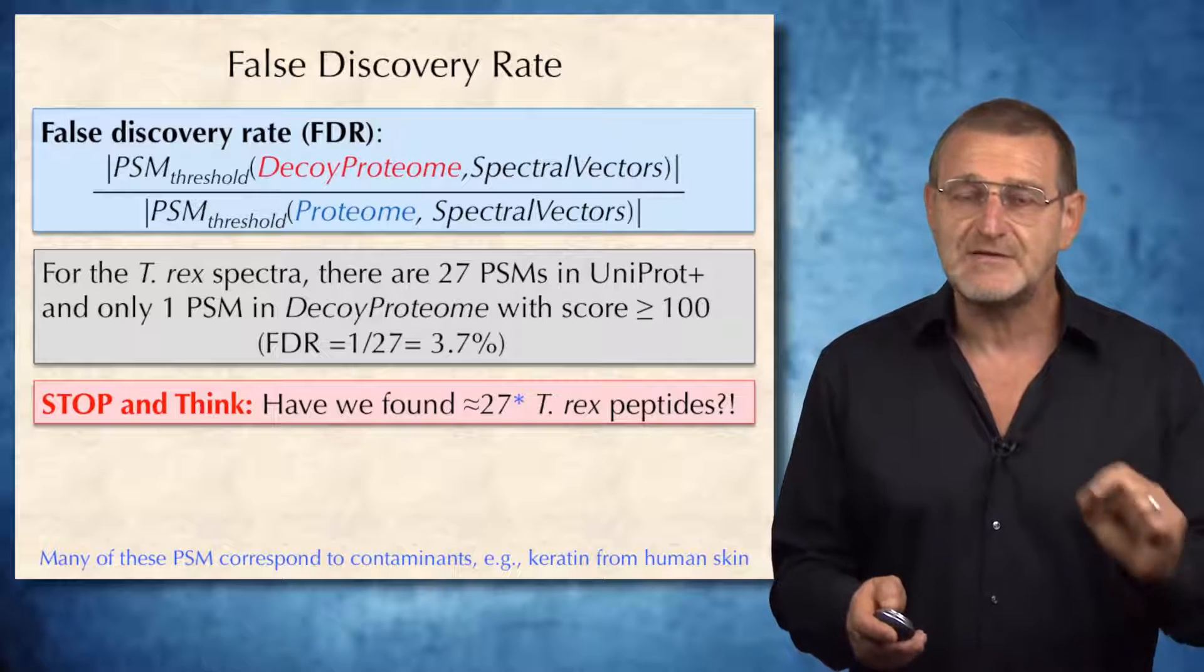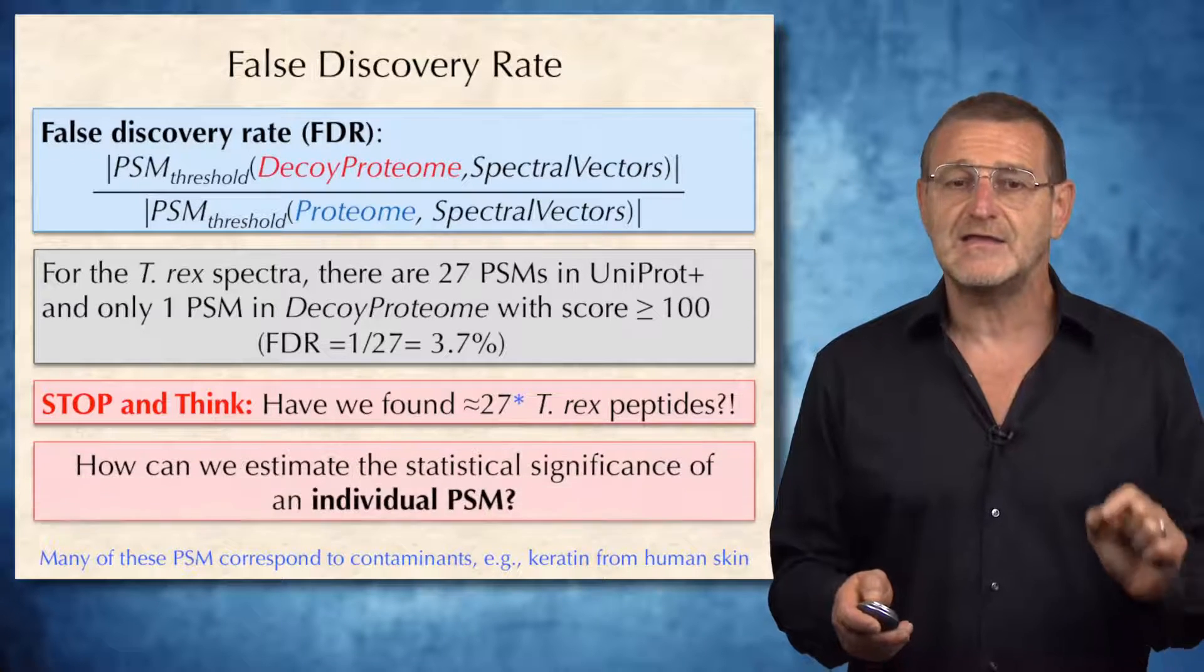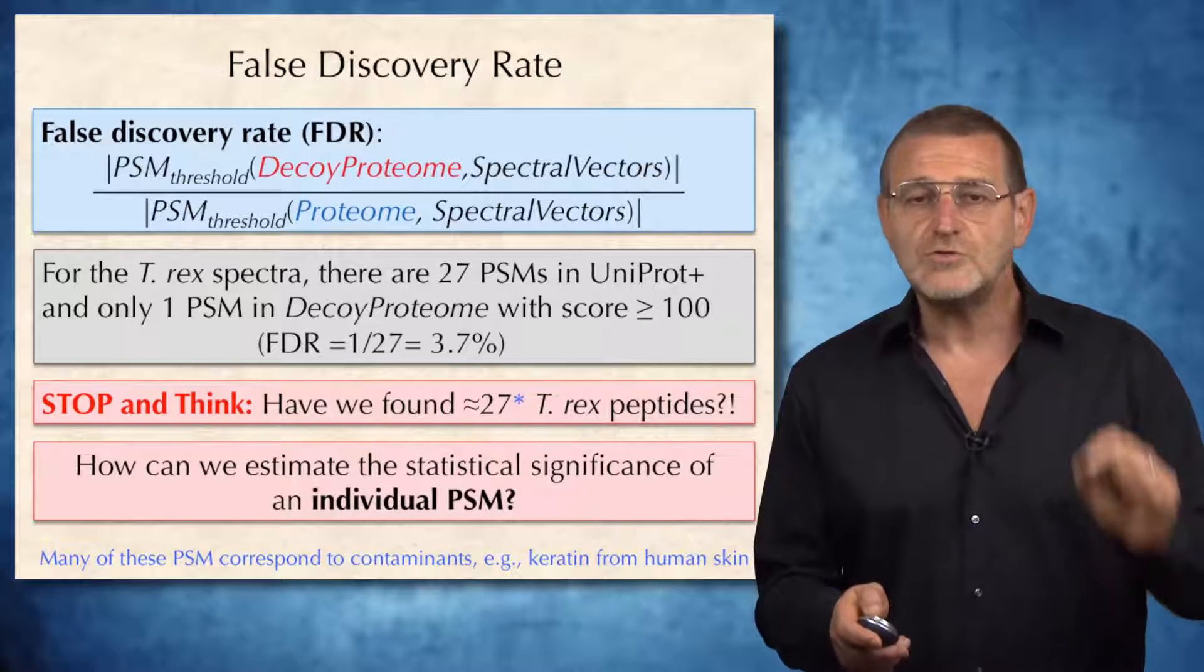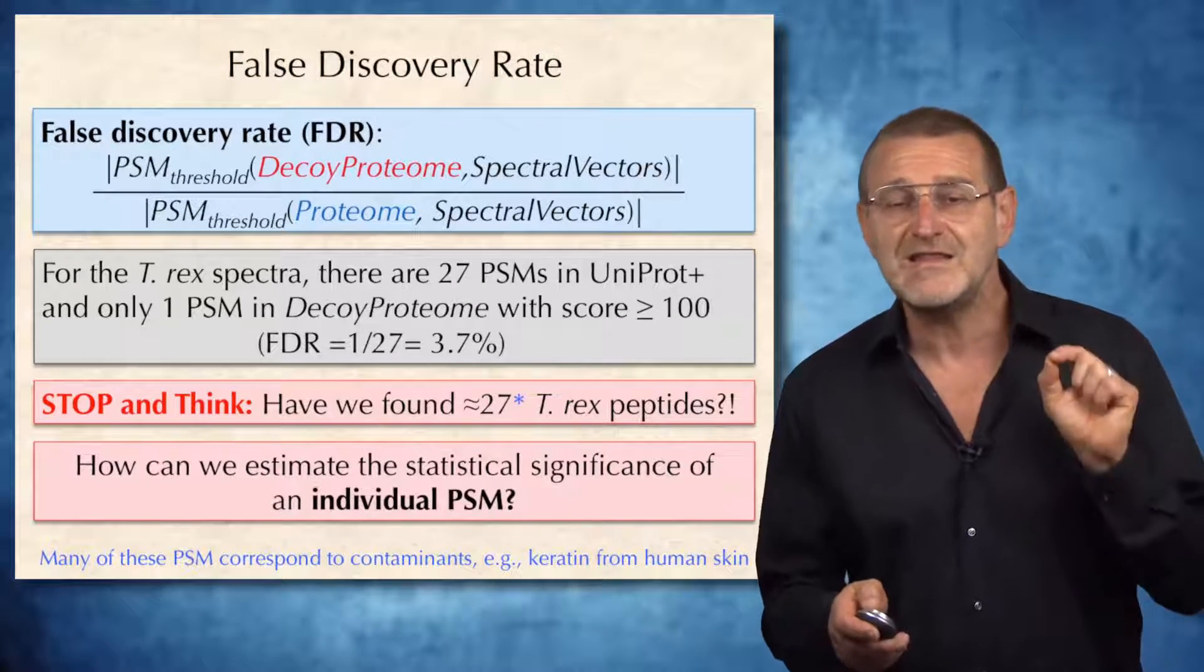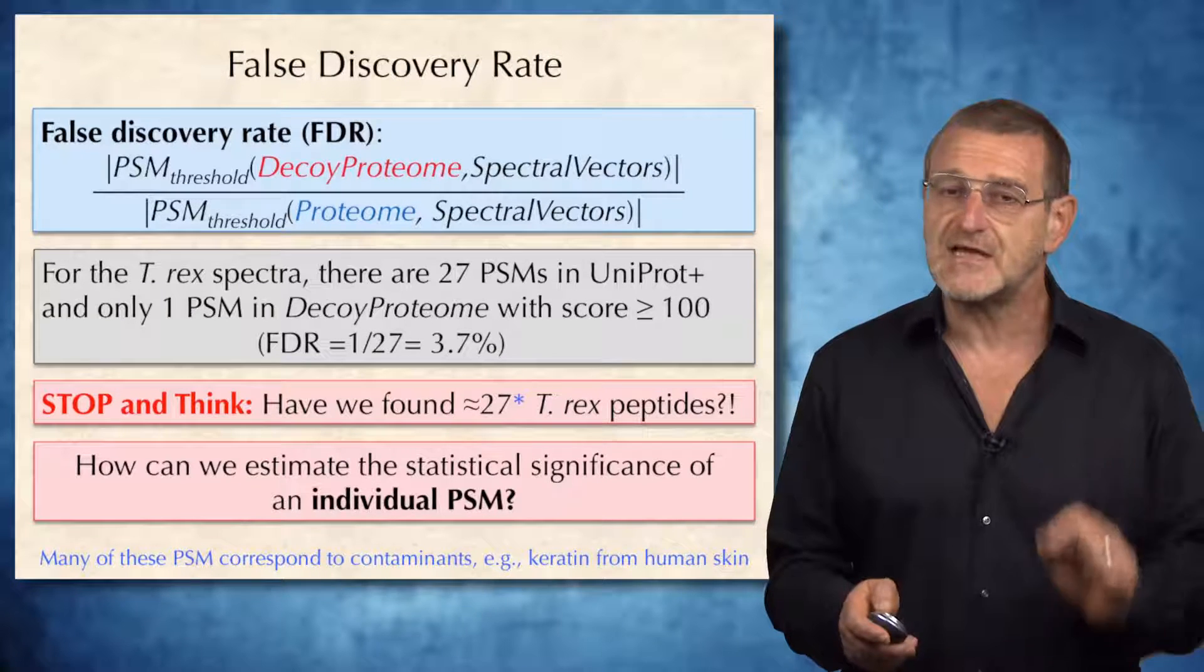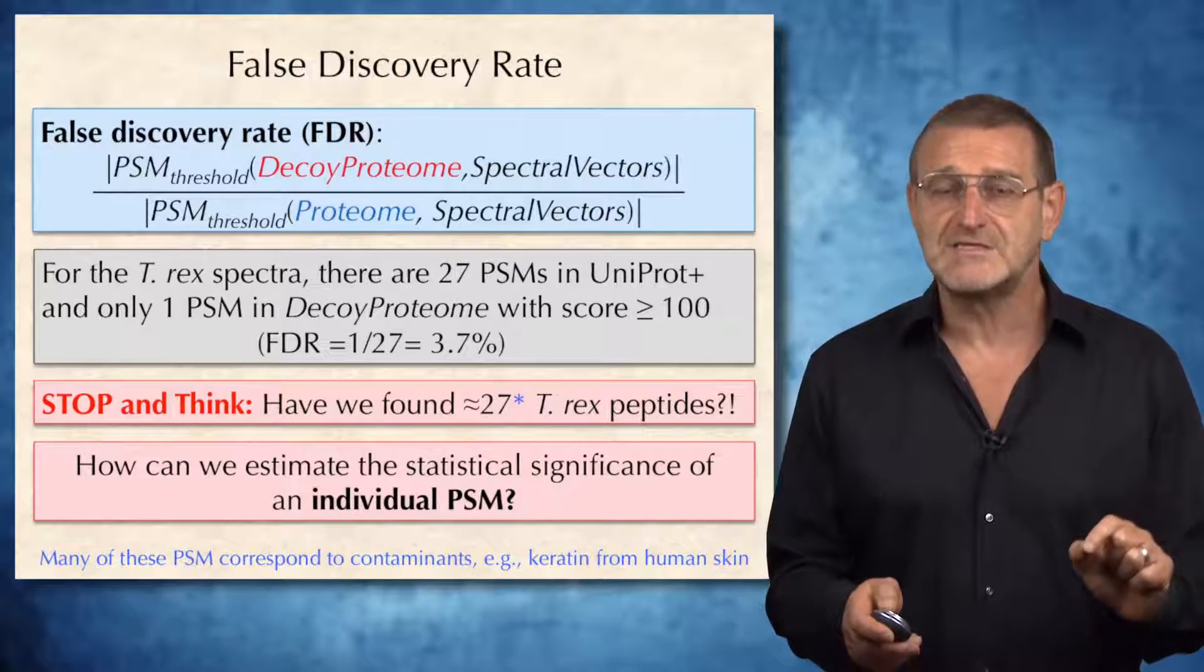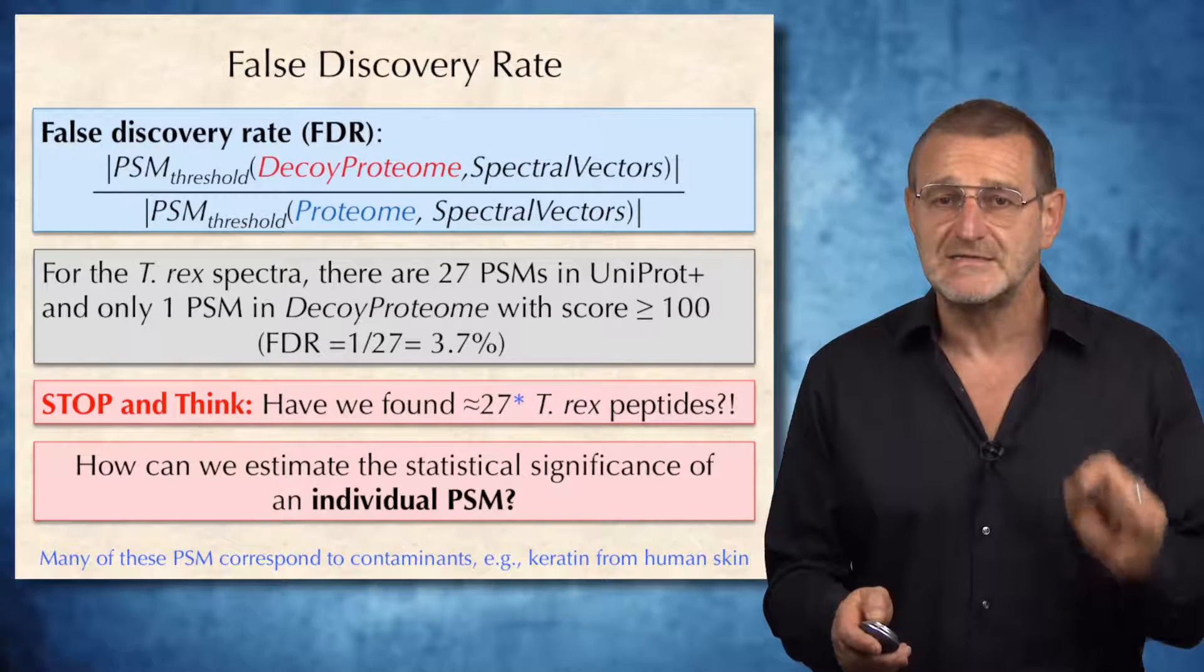The question that we have to answer to figure out which of the identified peptide spectrum matches are correct is how to estimate the statistical significance of individual peptide spectrum matches, rather than the bulk false discovery rate for the entire sample.